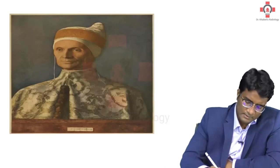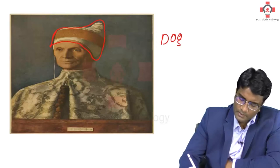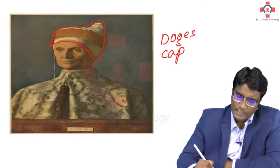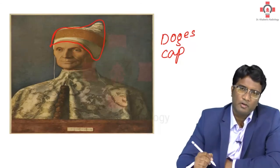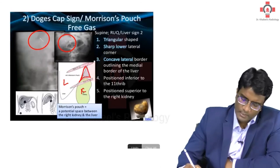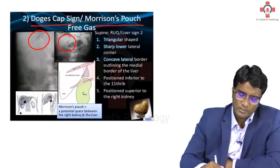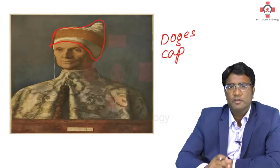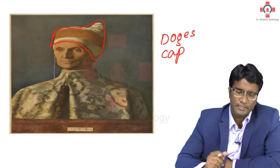What is the doggie's cap sign? It is a triangular cap of air. In case of hollow viscous perforation and pneumoperitoneum, this free air can go and collect between the liver and kidney in Morrison's pouch. This free triangular air is called the doggie's cap sign or Morrison's pouch free gas. So, doggie's cap sign is also a feature of pneumoperitoneum — it is the Morrison's gas present between the liver and the right kidney.